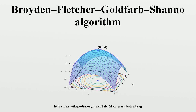The search direction pk at stage k is given by the solution of the analog of the Newton equation, where Bk is an approximation to the Hessian matrix, which is updated iteratively at each stage, and is the gradient of the function evaluated at xk. A line search in the direction pk is then used to find the next point xk+1, instead of requiring the full Hessian matrix at the point xk+1 to be computed as Bk+1.